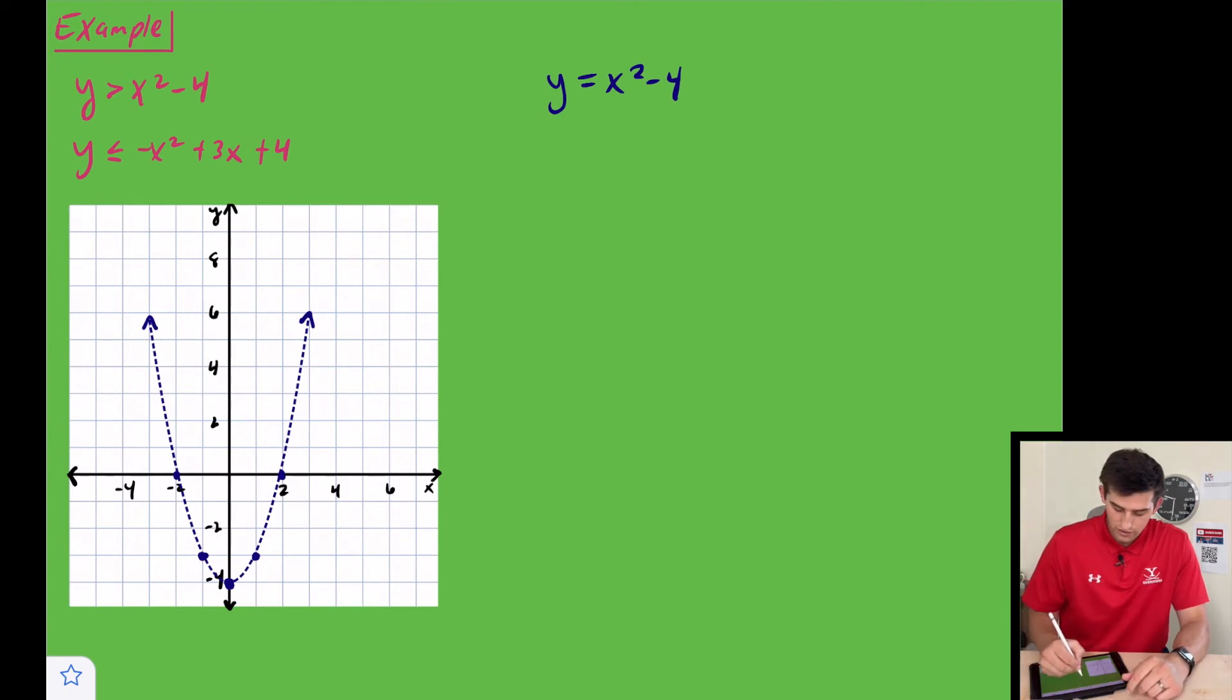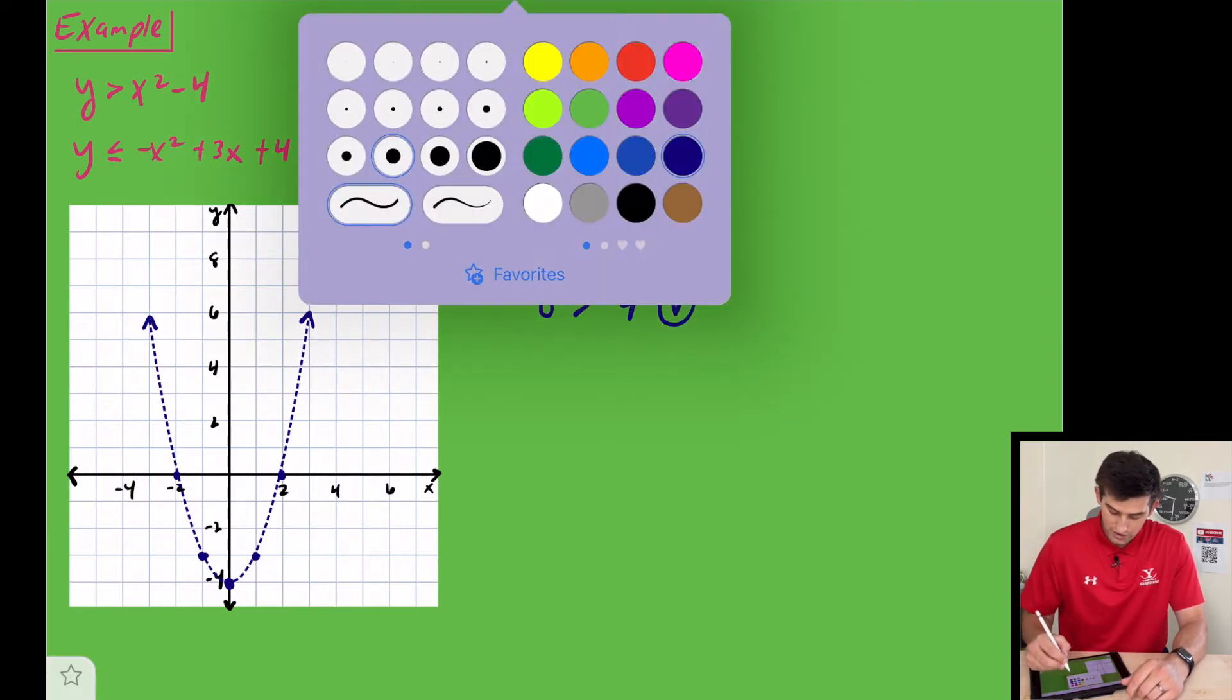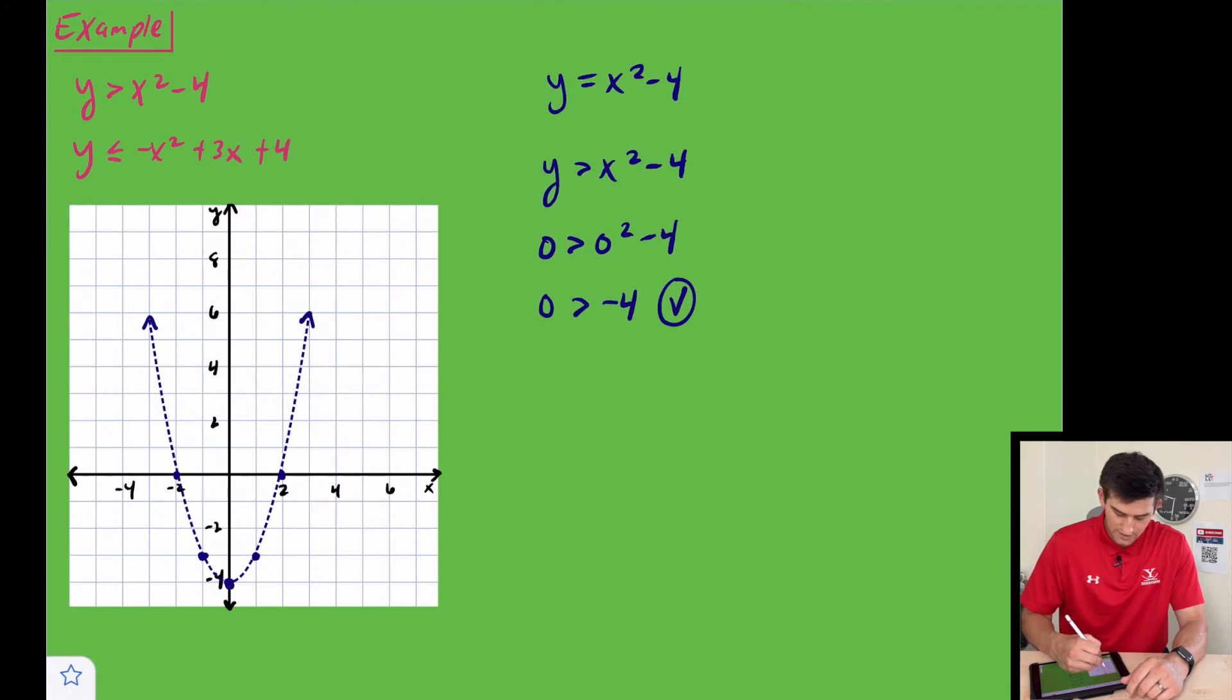Now let's use our origin as our test point, and we're going to test in this inequality. So zero is greater than zero squared minus four. Zero is greater than negative four, and that would be true. Because of that, we are going to shade inside of our parabola.